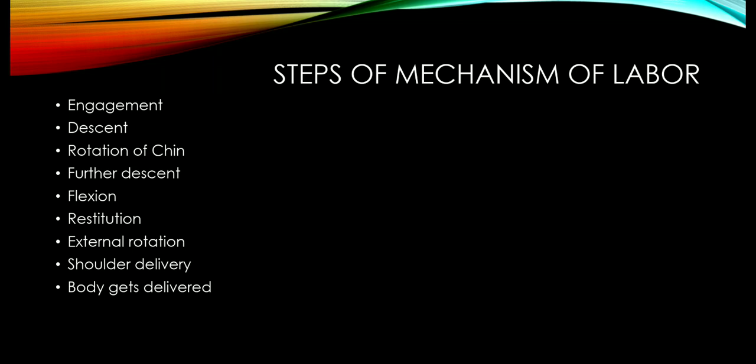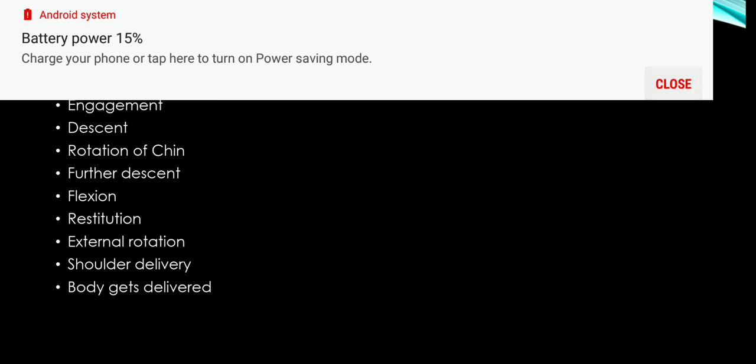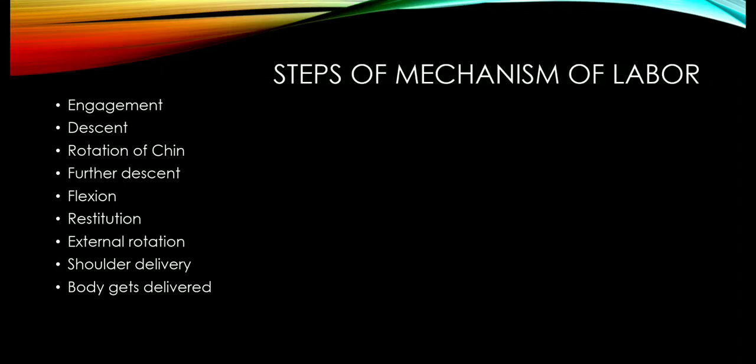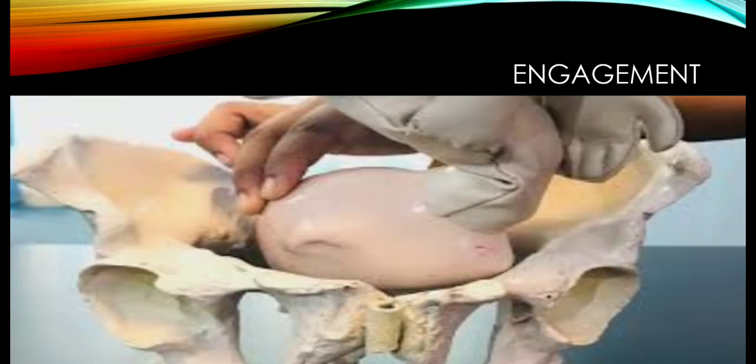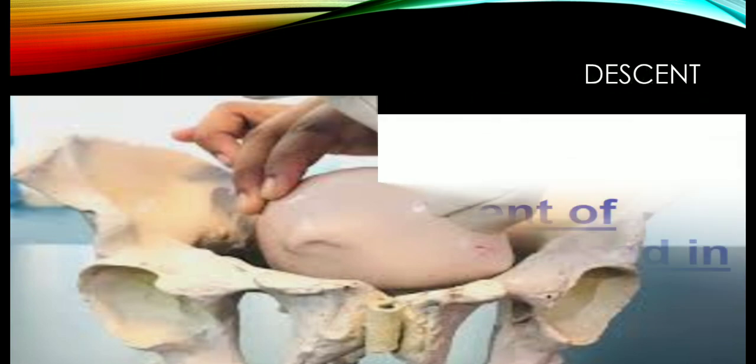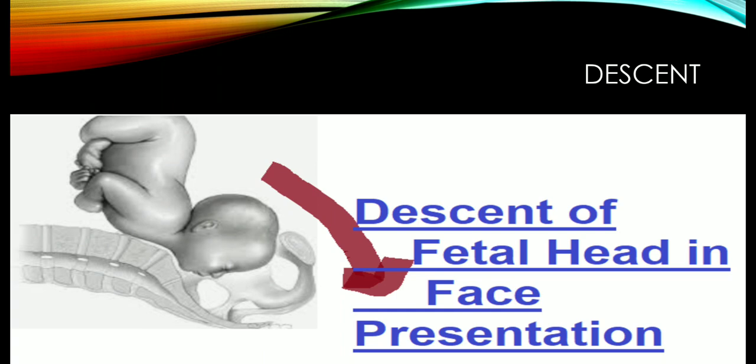There are a few differences in the mechanisms of labor compared to normal delivery. In normal delivery we have engagement, descent, flexion, internal rotation, extension, restitution, and external rotation — but here there are differences. The first step is engagement, where the head gets engaged and comes down. The second step is descent — with uterine contractions in the first stage and maternal expulsive effort in the second stage, the head comes down, as seen in the figure.